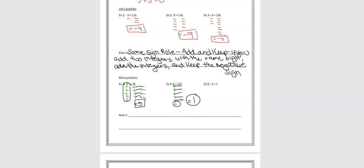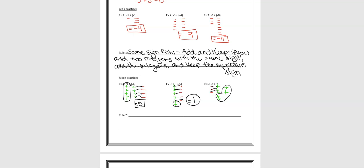Let's try this last one. I have 3 negatives: 1, 2, 3. Plus 7 positives: 1, 2, 3, 4, 5, 6, 7. So how many cancel out here? 1, 2, 3. So how many do I have left? Positive four.